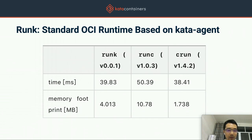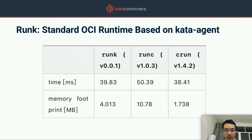We also added a new component called RunK to start a standard Linux container based on the Kata Agent. This is currently an experimental feature. Because RunK is written in Rust, it is faster than RunC and has a smaller memory footprint than RunC. There is still room to improve when comparing it with CRUN, which is written in C, but because RunK is in Rust, we gain Rust's safety features — for example, we do not have to worry about memory safety bugs or certain signal-related bugs found in RunC.